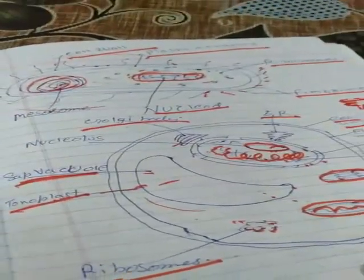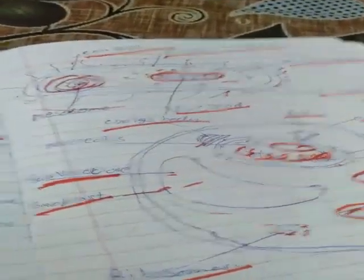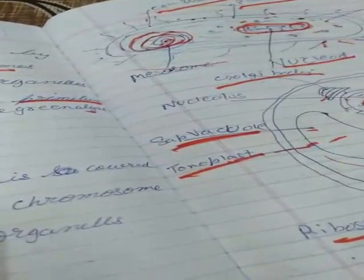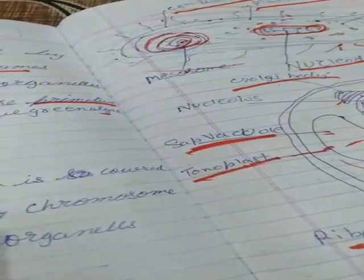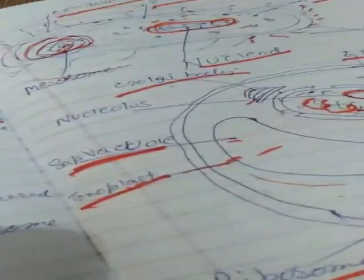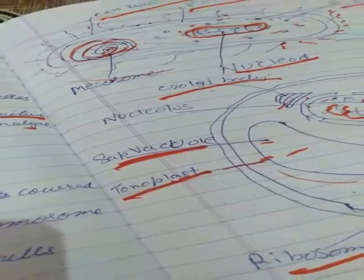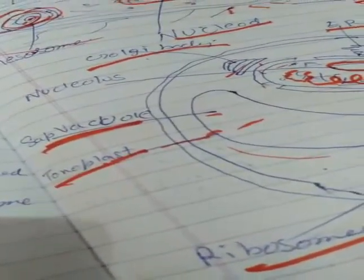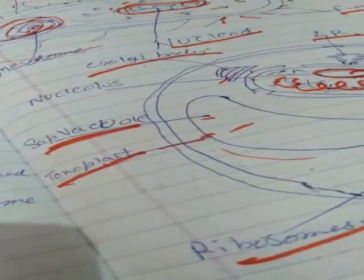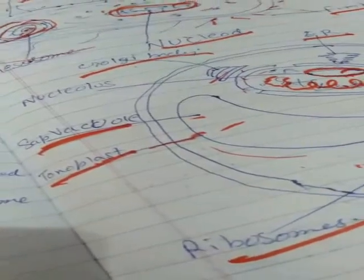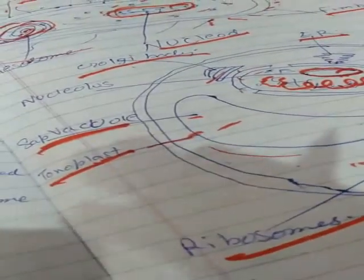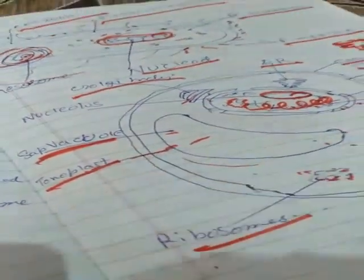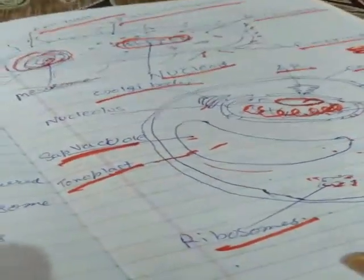We have studied about the prokaryotic cell and eukaryotic cell, and the diagram is also there. You have to draw the diagram, write the characteristics of the eukaryotic cell and the prokaryotic cell, and draw the diagram of both the prokaryotic cell and the eukaryotic cell.